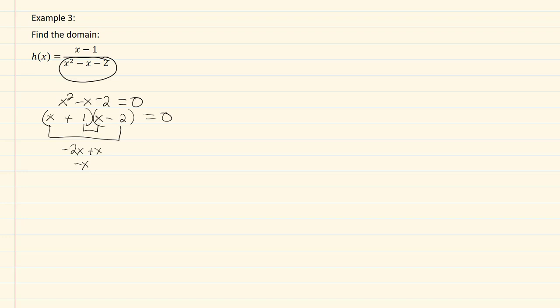So that means I've got x plus 1 equal to zero, and x minus 2 equal to zero. If we solve those, we're going to get x equal to negative one, and x equal to two. So what that means for our domain then is that x cannot equal negative one or two. That's our domain.